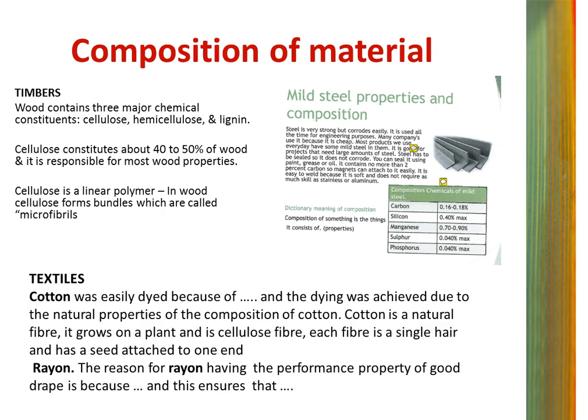Composition. Students need to be supported to explore to determine how composition and structure determine the performance properties of the material. Here, wood is what this could look like. Wood contains three major chemical constituents: cellulose, hemicellulose and lignin. Cellulose constitutes about 40–50% of wood and it is responsible for most of the wood's properties. Cellulose is a linear polymer and wood cellulose forms bundles which are called microfibrils. For textiles, cotton was easily dyed because the dyeing was achieved due to the natural properties of the composition of the cotton.